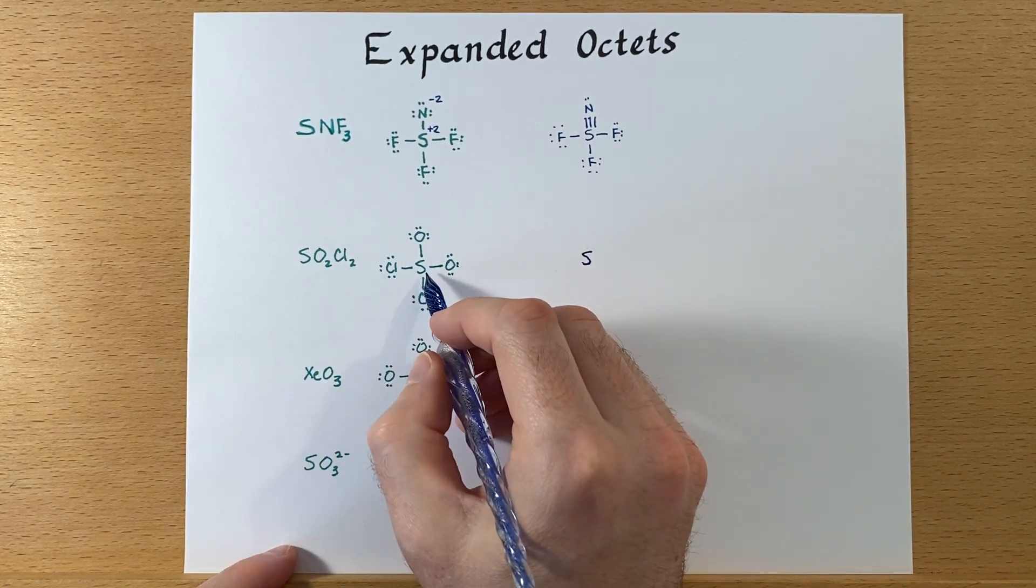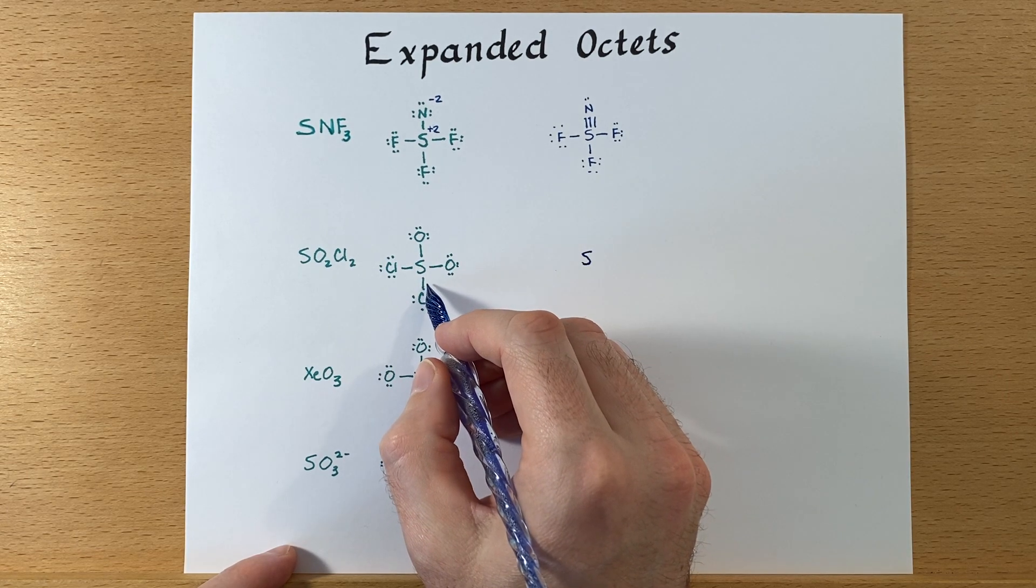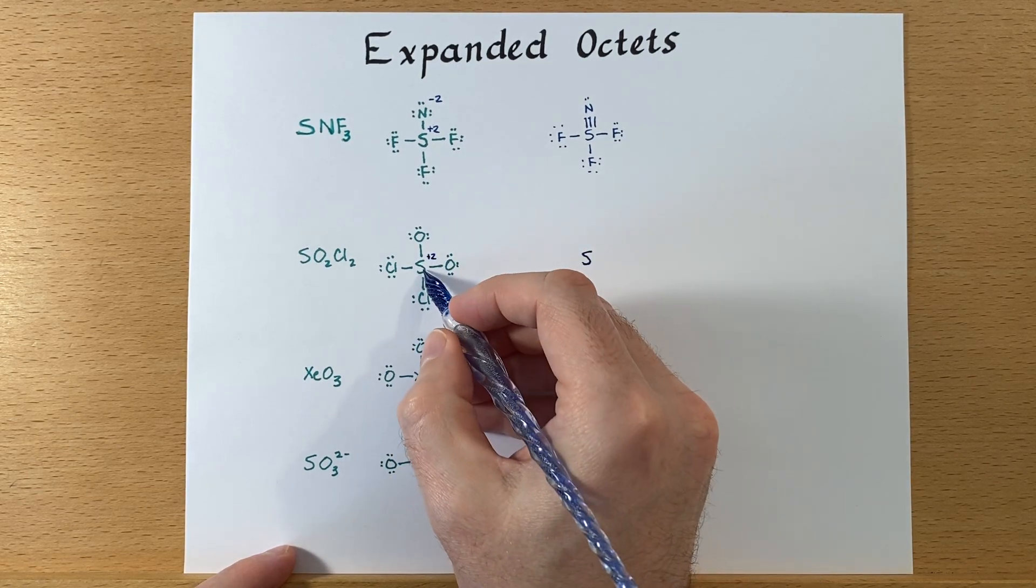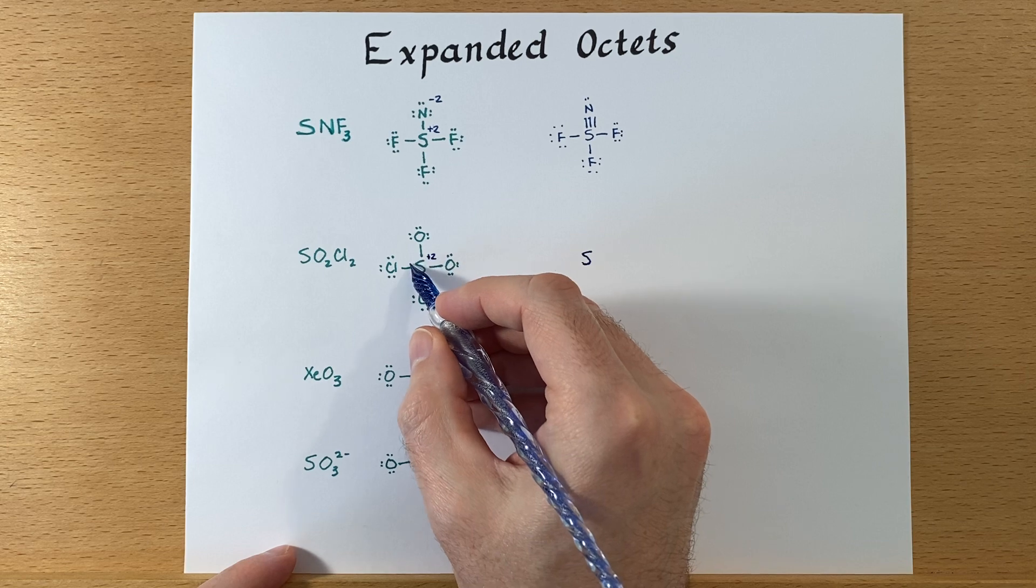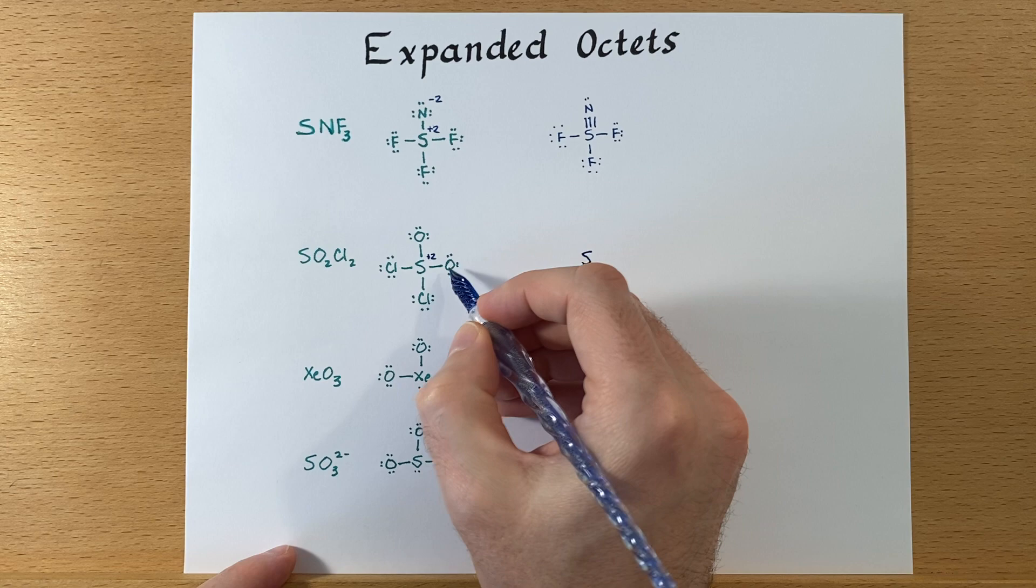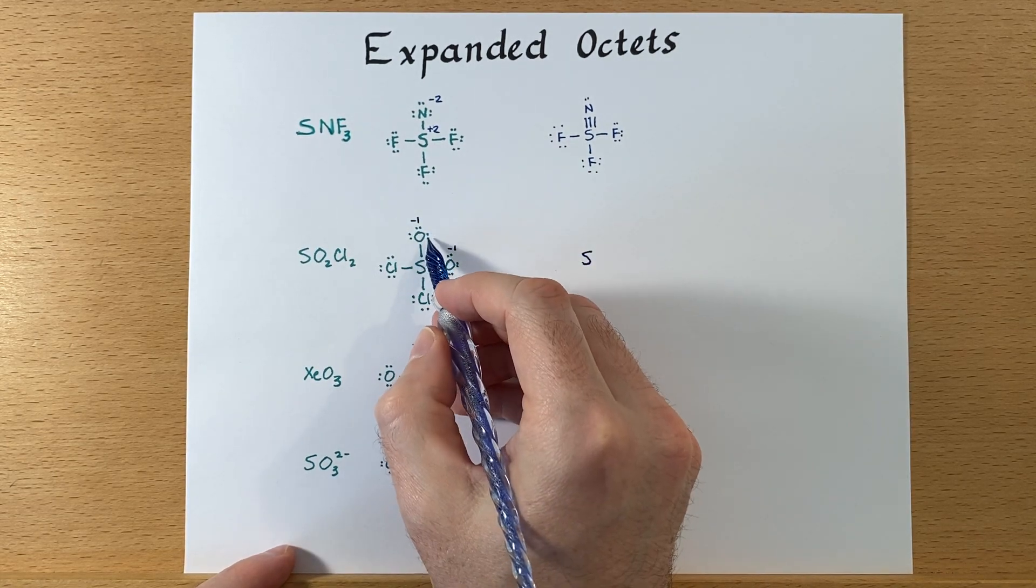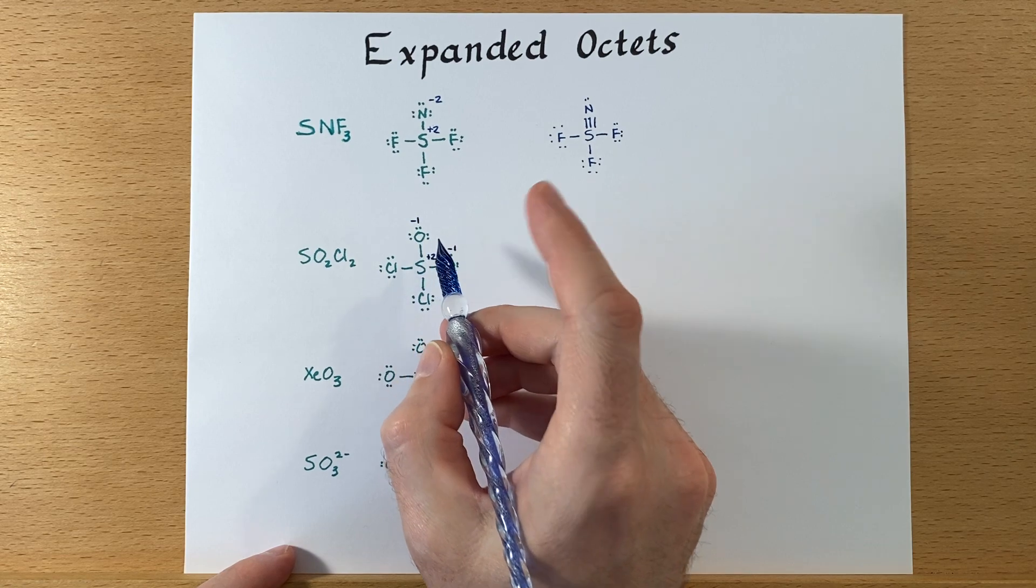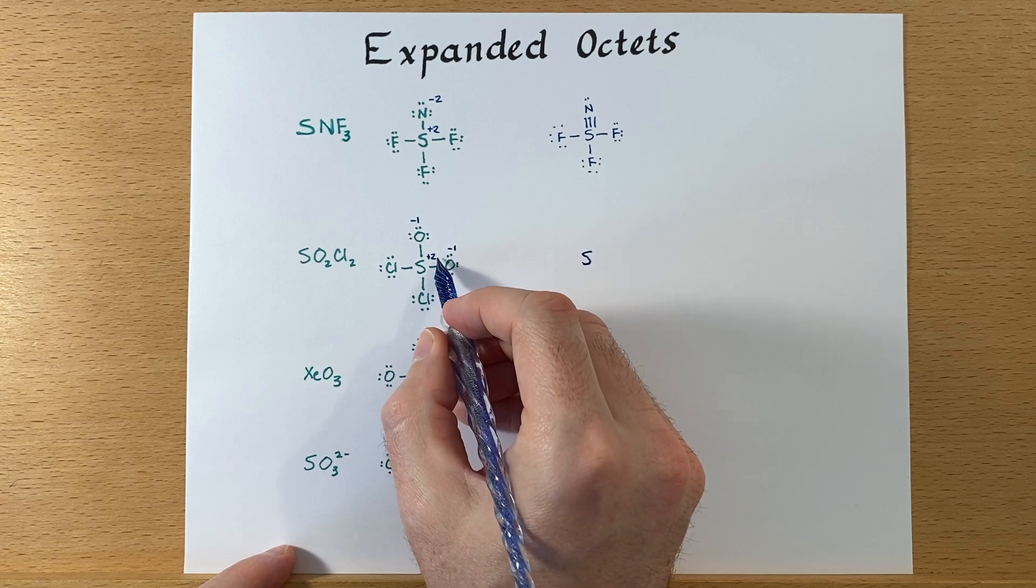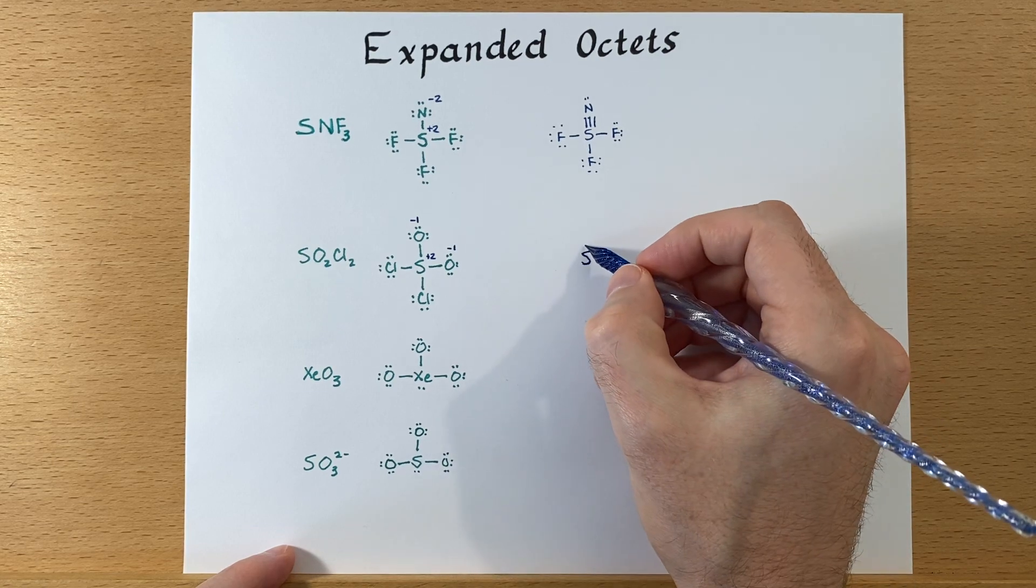Let's look over here. We have an octet rule compliant structure here, but we still have a plus two charge on sulfur. One, two, three, four, should have six. And we'll have a minus one on oxygen, both of them, because we have seven around the oxygen and it starts with six. So we'll move some electrons from the oxygen in and form double bonds and see how that works.